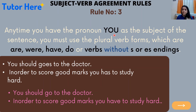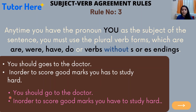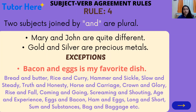Rule number three: if you have the pronoun 'you' as the subject of the sentence, you will use plural verb forms — 'are,' 'were,' 'have,' 'do,' or verbs without 's' or 'es' endings. These two sentences are grammatically incorrect: 'You should go to the doctor' is fine, but 'You has to study hard' is wrong. The correct answer is: 'You have to study hard.'